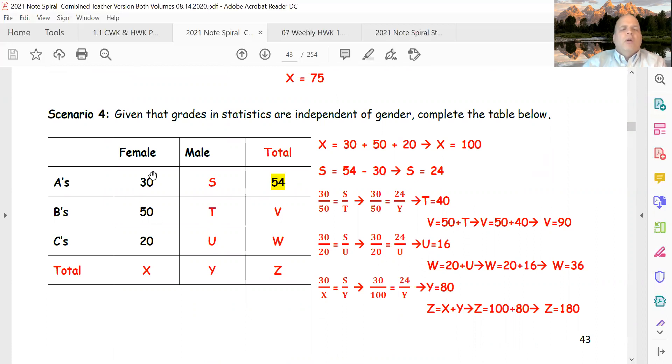Please also know that rows and columns must sum up. So this number had to be 24 because 30 plus 24 has to equal 54.